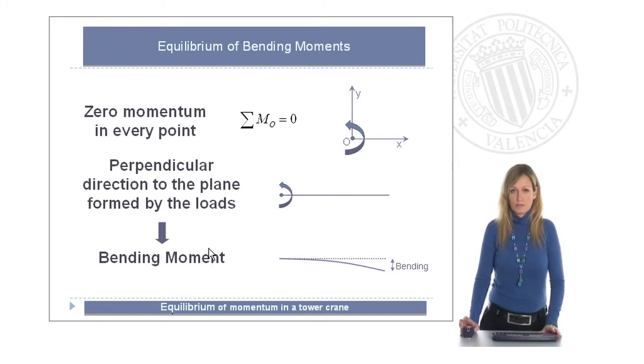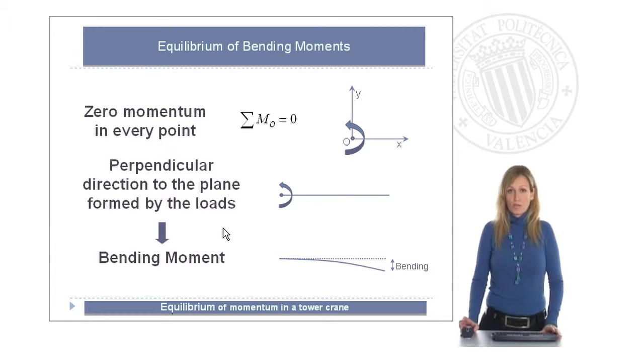There is an important property of this equation telling us that the momentum has to be zero not only in the origin but in every point of the structure. And this momentum is a vector which direction is perpendicular to the direction of the plane formed by the loads.